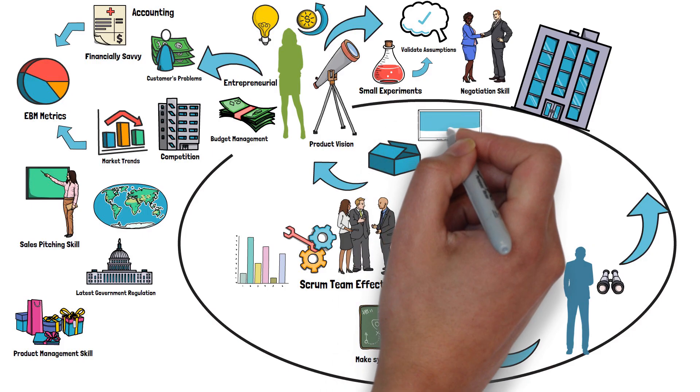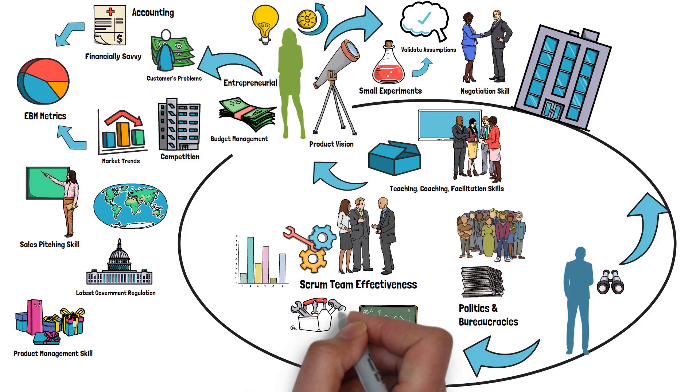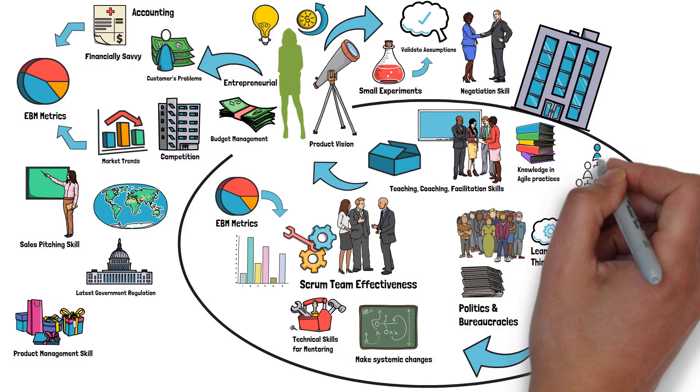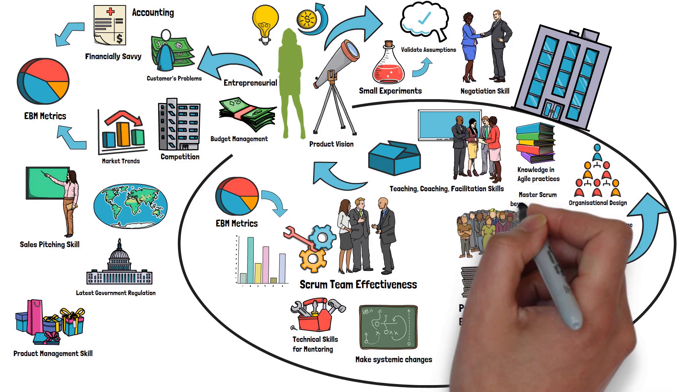The Product Owner also needs skills in product management. For the Scrum Master, drawing from the eight Scrum Master hats, the Scrum Master needs effective teaching, coaching, and facilitation skills. They may also have technical skills for mentoring, knowledge of agile practices, and how to use EBM metrics to improve effectiveness. On top of that, the Scrum Master needs lean thinking and systems thinking. As written in the Scrum Guide, the Scrum Master advises the company on how to roll out Scrum, so they need to understand organizational design and the psychology of change.